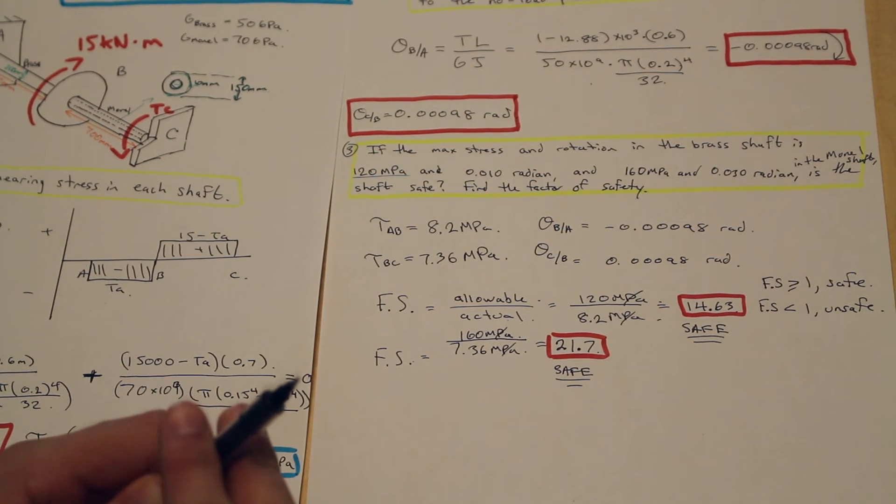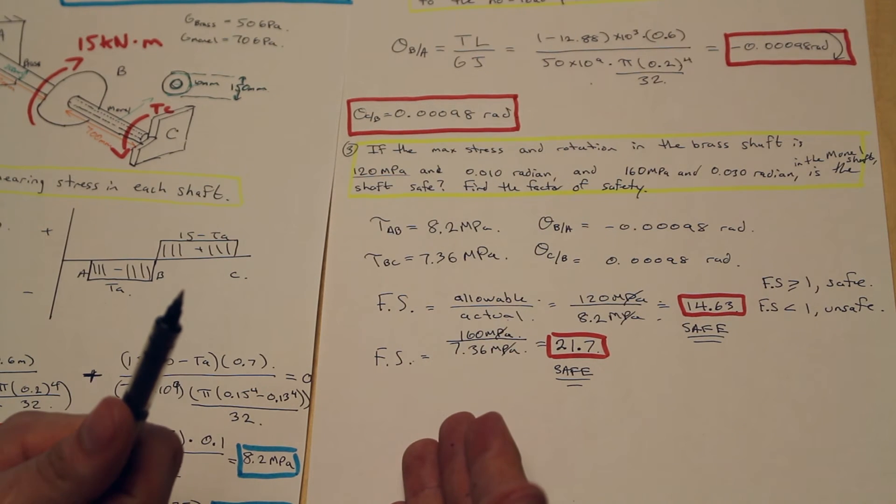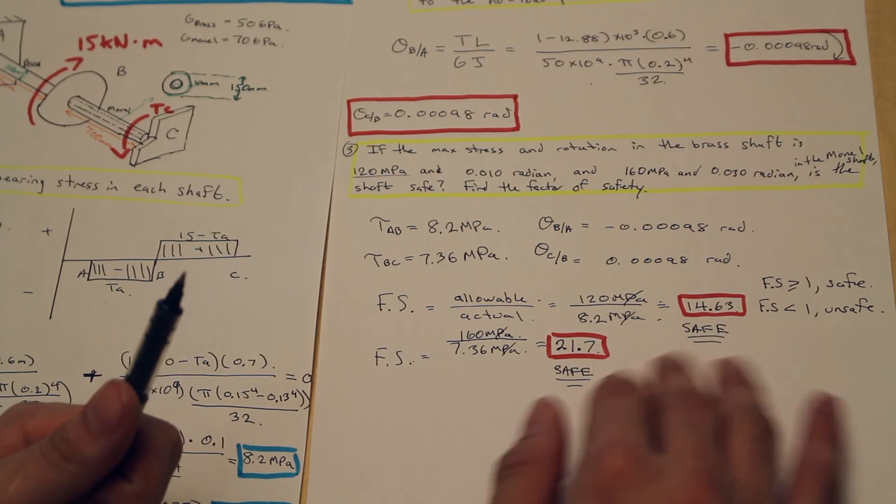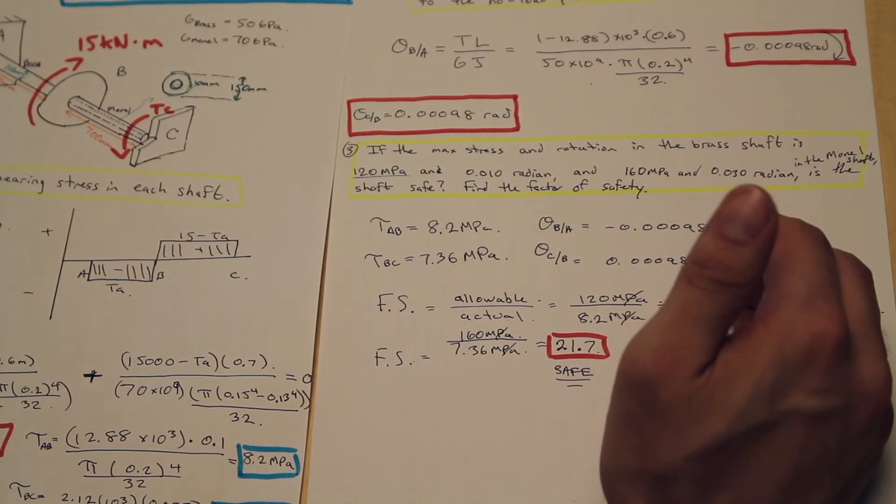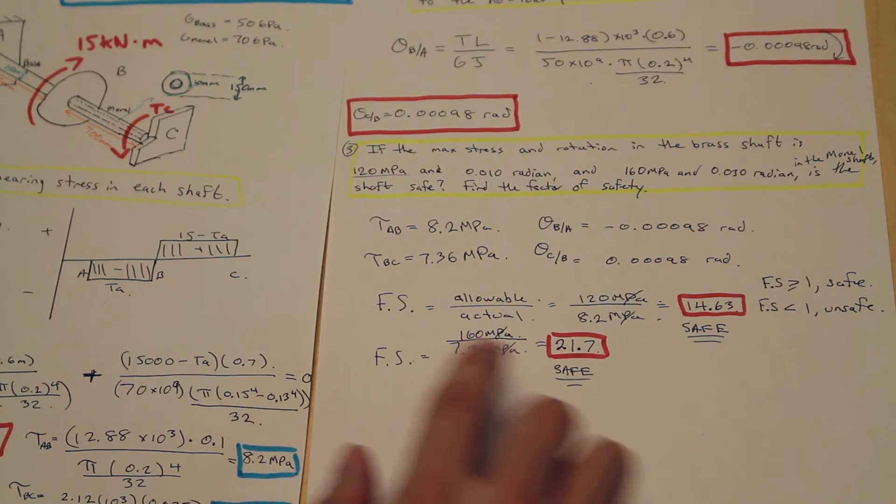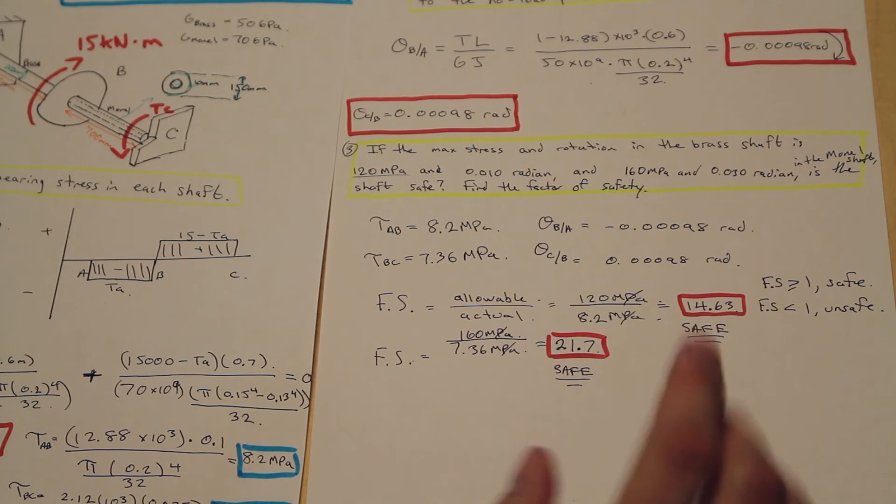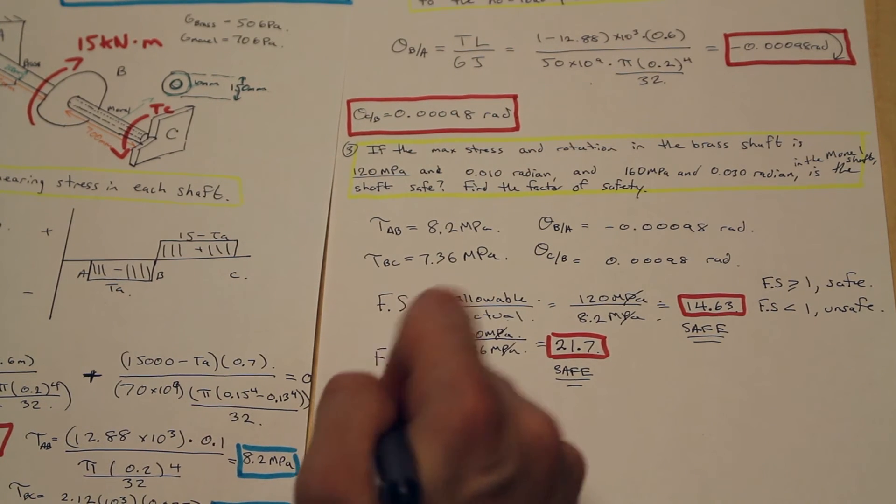However, if the shaft is safe in shear but unsafe in the angle of twist, it doesn't matter that it can resist the shear stress. It matters that it can resist both the shear stress and the angle of twist. If in any section the shaft fails in either shear or in twist, the shaft is unsafe, and that's what the question is asking.